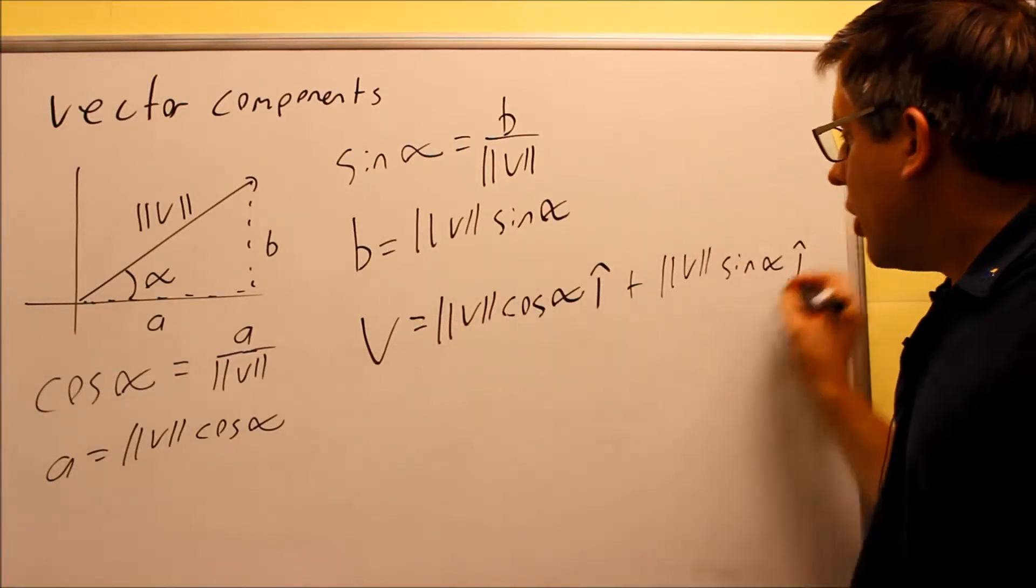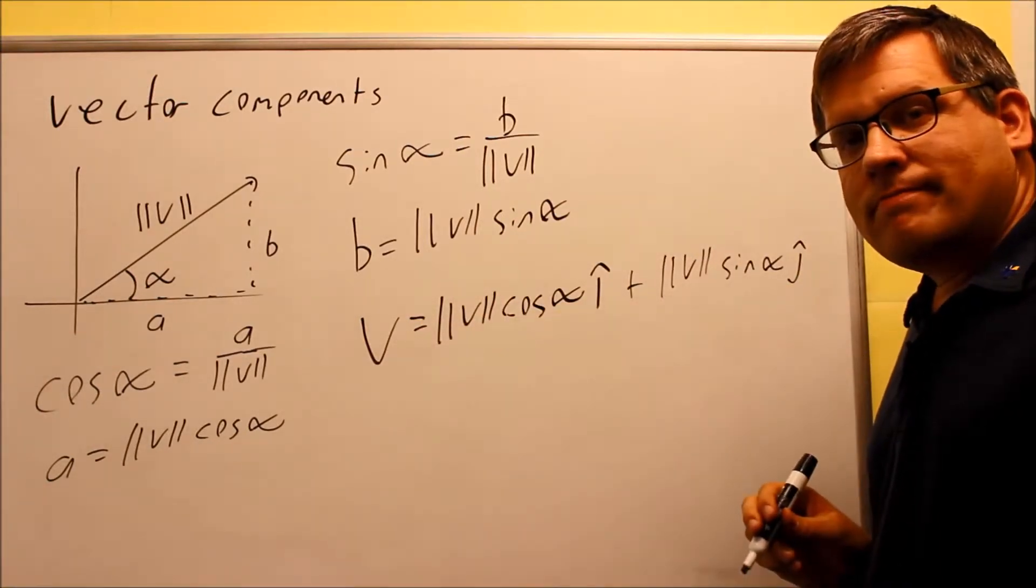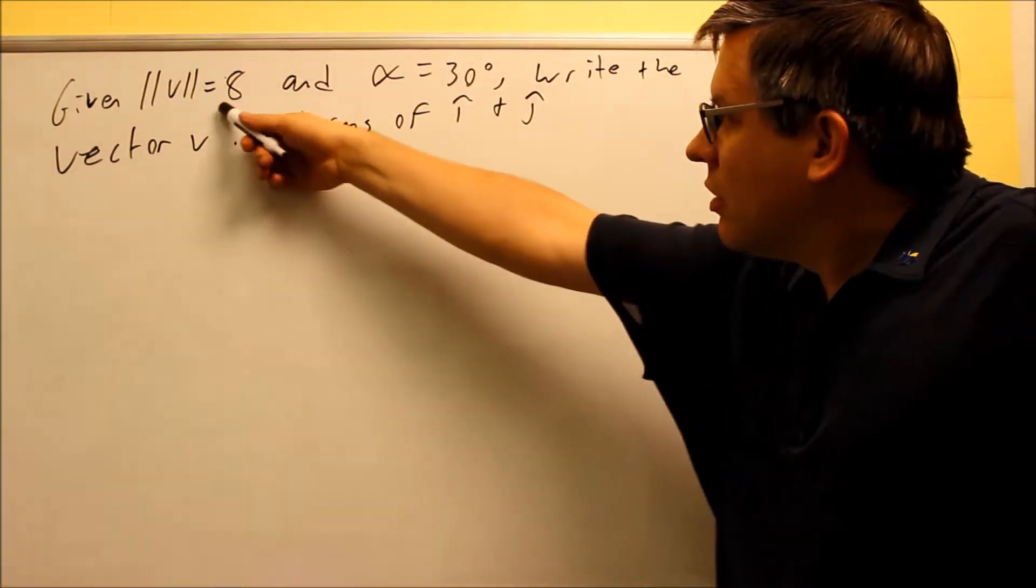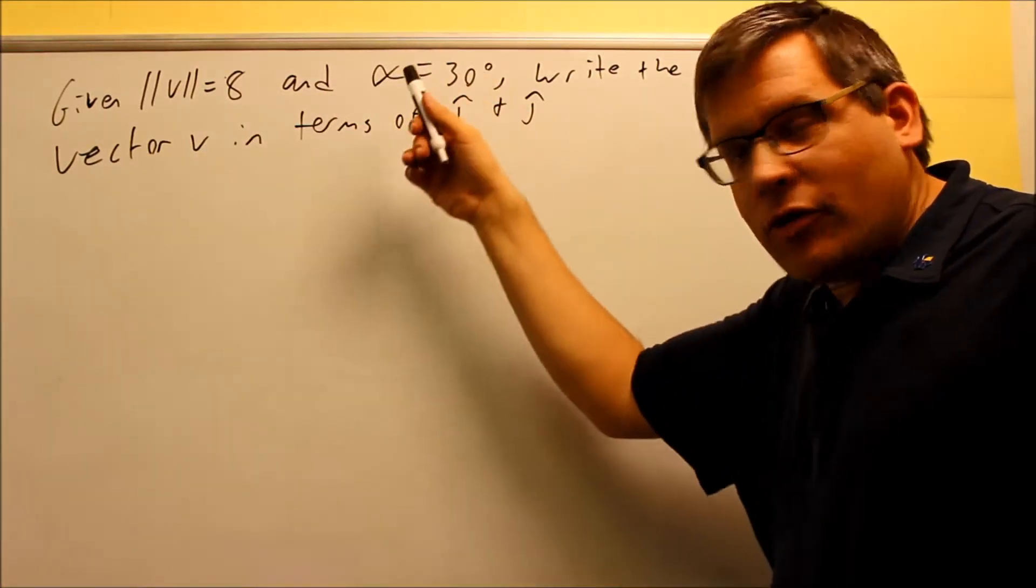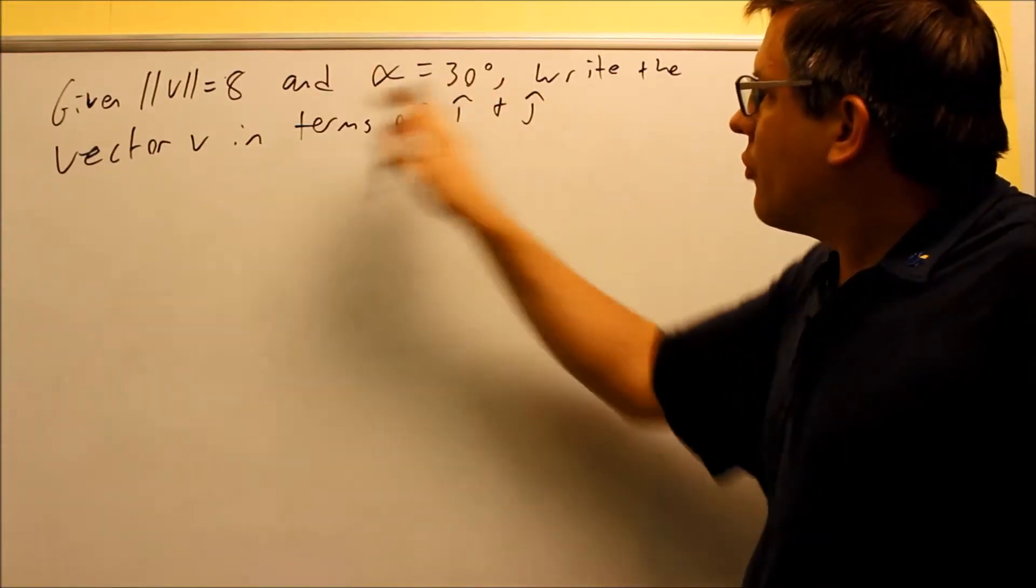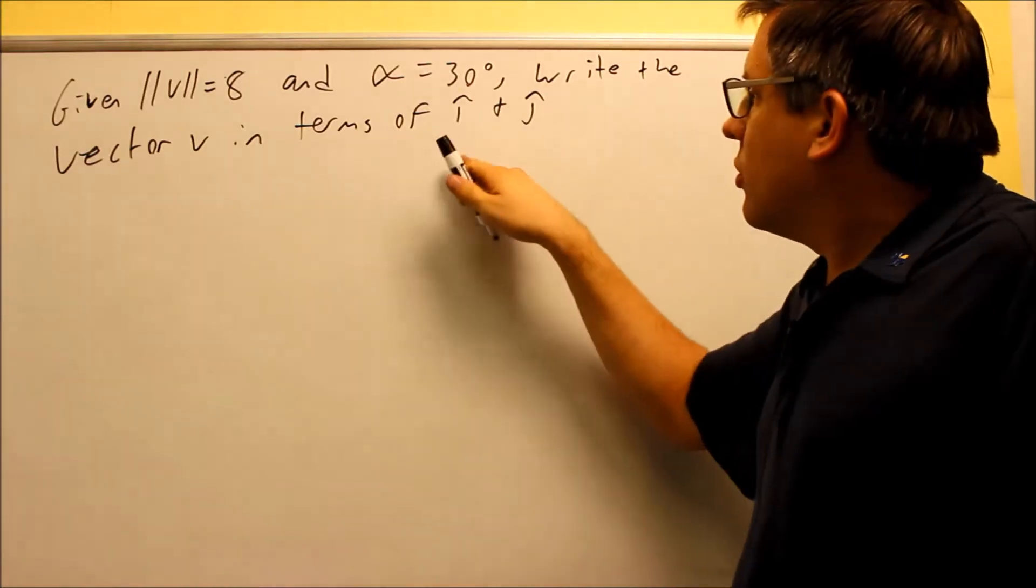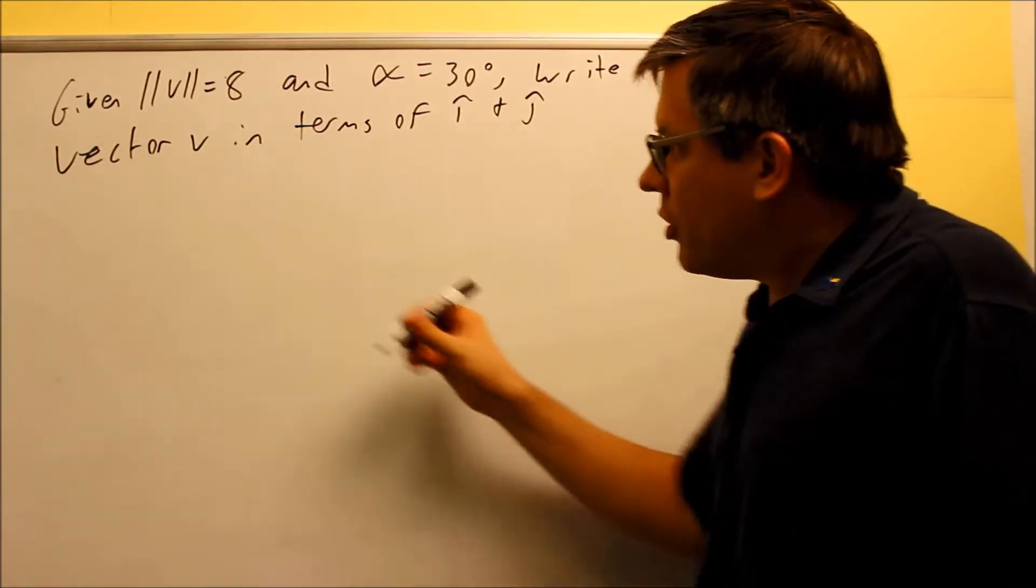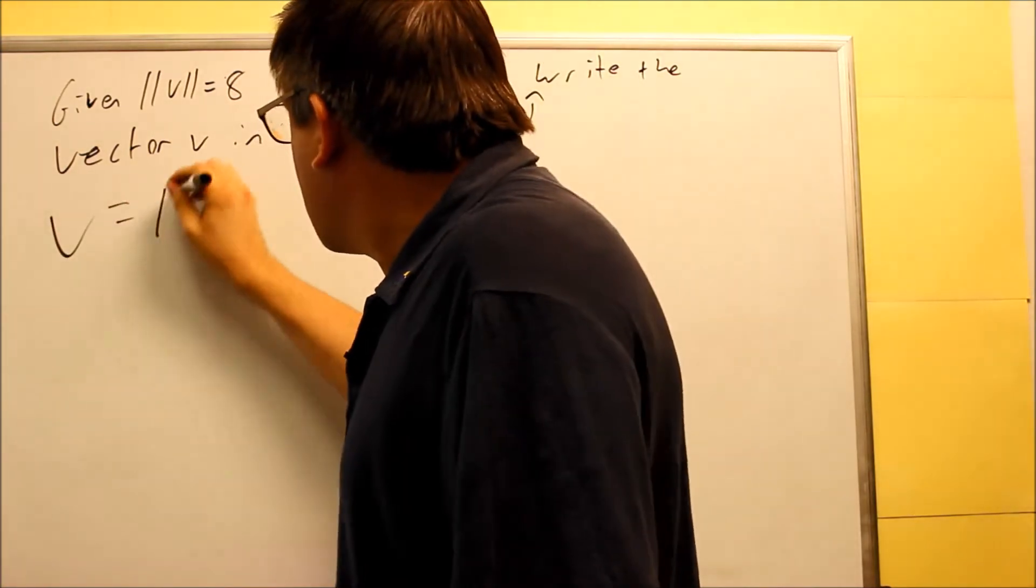So now that we've derived the formula, let's take a look at an example. Okay, now for the example, we're given the magnitude is 8 and alpha is given as 30 degrees. What they're saying to do is take this information and write out a vector in terms of I and J.